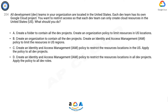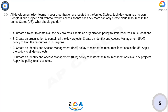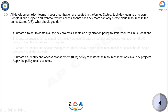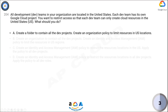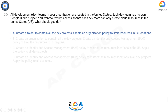C: Create an IAM policy to restrict the resource locations in the US, apply the policy to all dev projects. D: Create an IAM policy to restrict the resource locations in all dev projects, apply the policy to all dev roles. The correct answer is A.